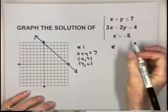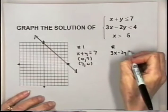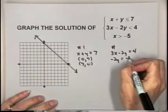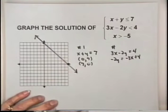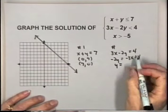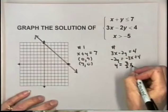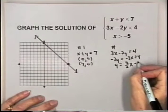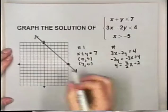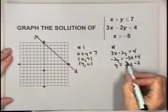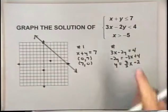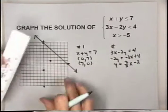For inequality two, the corresponding equation is 3x minus 2y equals 4. Solving for y: negative 2y equals negative 3x plus 4, dividing by negative 2 gives y equals 3 halves x minus 2. The y-intercept is (0, -2) and the slope is positive 3 halves, so we go up 3, to the right 2. This inequality does not include equals, so we draw a dotted boundary line.